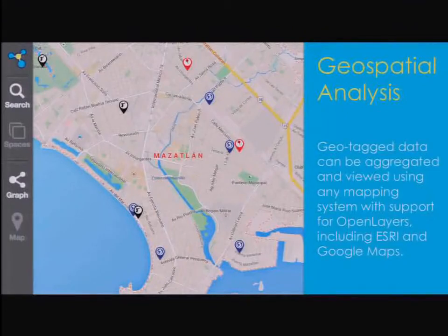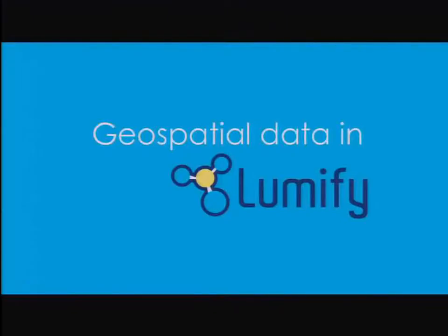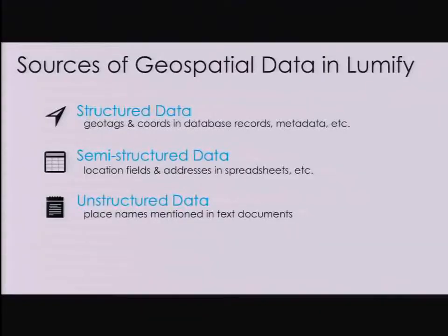We do a lot of stuff with geospatial — that's what we're here to talk about today. Any data that has some sort of geotag associated with it can be aggregated and viewed in Lumify. We can work with any mapping system that supports OpenLayers; typically we use Google Maps for demos. There are three different types of sources of geospatial data: structured, semi-structured, and unstructured. Structured data is the sort that comes pre-tagged — traditional geospatial data that already has a coordinate assigned, like GPS-tagged tweets or a database of sensor logs with GPS data. That's plottable on a map right out of the box.